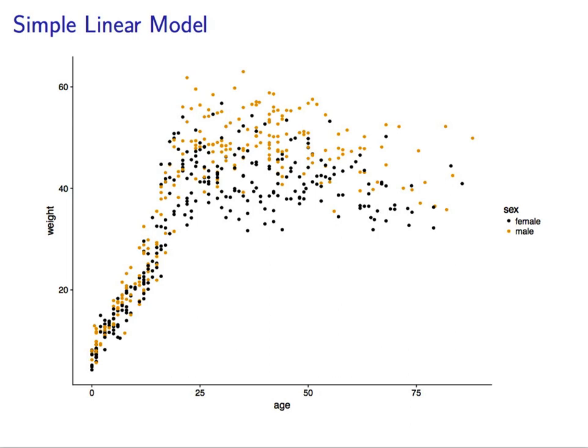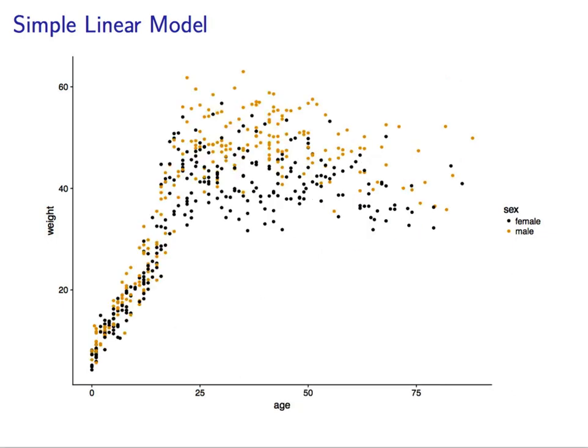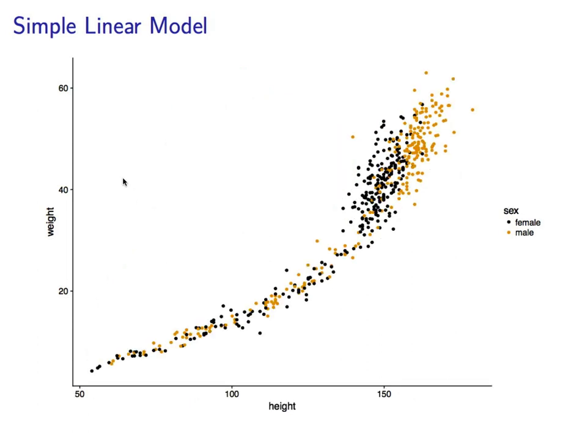So if we're going to make a model to model weight using this dataset, we might first want to look at a very simple model, modeling weight as a function of height and sex. If we look closer at the data, however, we see that we have children included in the sample, and that there's a different pattern to the association for children than for adults. So down here we see people of young age that are still growing.